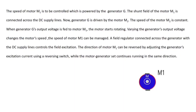The generator is driven by the motor M2, and the speed of motor M2 is constant. The output of the generator is given to M1. A field regulator connected across the generator with the DC supply line controls the field excitation. The direction of motor M1 can be reversed by adjusting the generator excitation current using the reversing switch, while the motor-generator set runs continuously in the same direction.